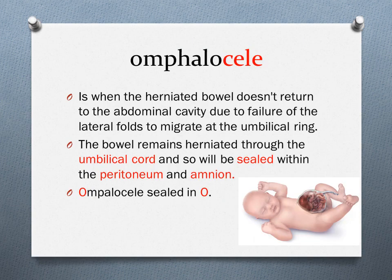Now we are ready to talk about omphalocele. What happens here is that the bowel that has herniated does not go back into the abdominal cavity. This is because the lateral folds fail to migrate around the herniated bowel, so the bowel remains inside the umbilical cord. It would be sealed within peritoneum and amnion. An easy way to remember this is by looking at the word omphalocele — it contains "seal" — so it's sealed within the peritoneum and amnion, as if it were inside the abdominal cavity. Omphalocele does not really lead to bowel pathologies.